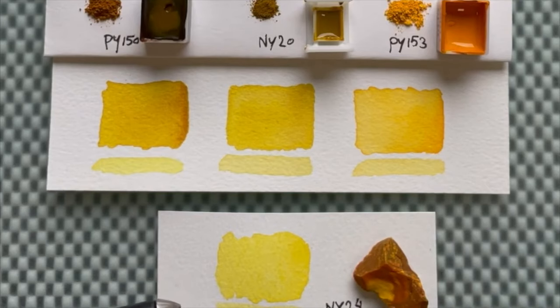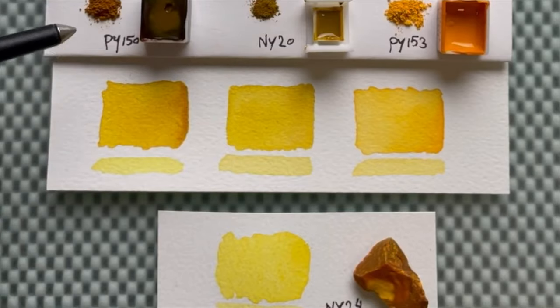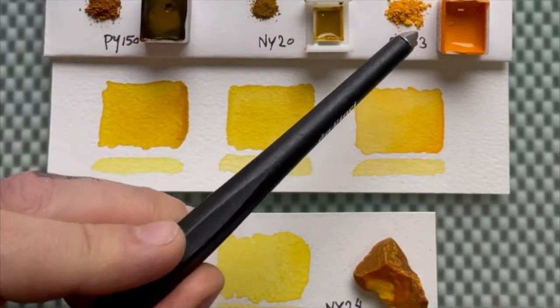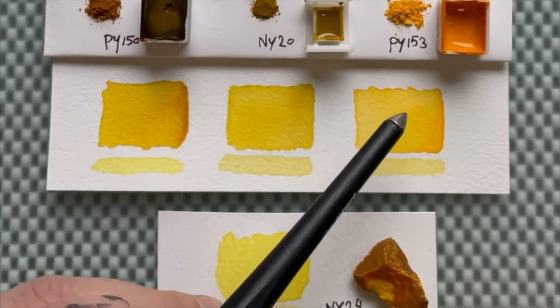So I have Nickel Azo Yellow, Nickel Dioxine Yellow and Gamboge over here compared to NY20, the genuine Indian yellow. But which are the ones that you like? From which brand? So let me know down below in the comments. Hope to see you next video and see you soon.